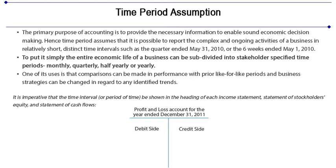One of its uses is that comparisons can be made in performance with prior like-for-like periods, and business strategies can be changed in regard to any identifiable trends. It is imperative that the time interval or period of time be shown in the heading of each income statement, statement of stockholders' equity, and statement of cash flows. For example: profit and loss account for the year ended December 31, 2011.